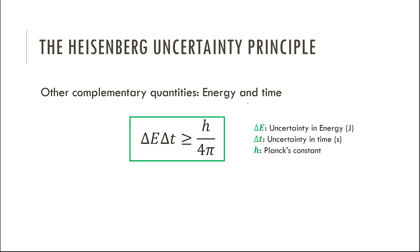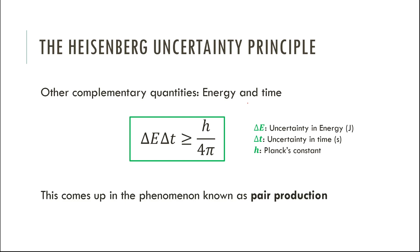There's another one. There are two other units you can multiply together and get those same combined units - a joule times a second gives the same units as momentum times position. So energy and time are also complementary quantities, and you have uncertainty in both of them.